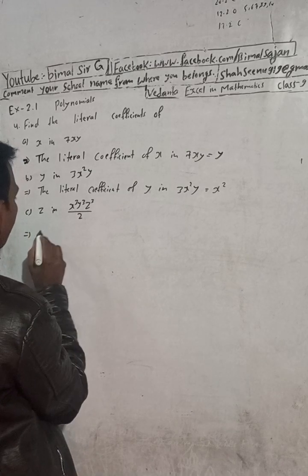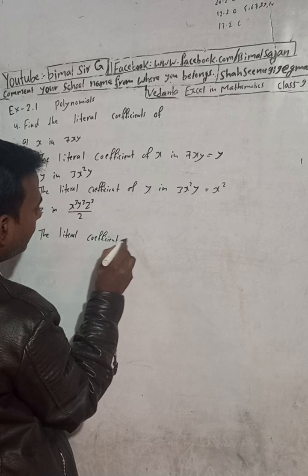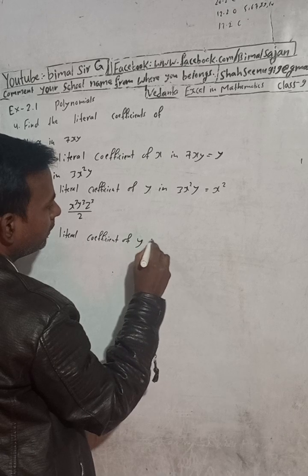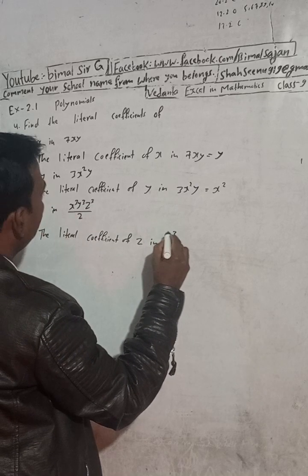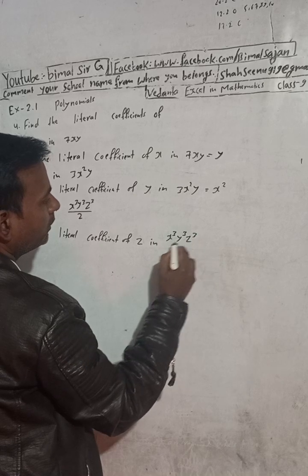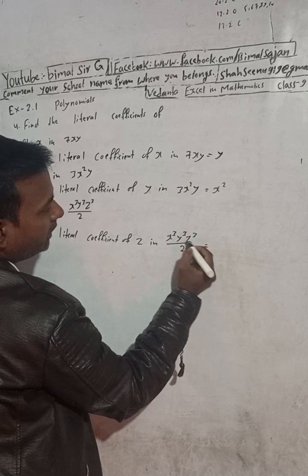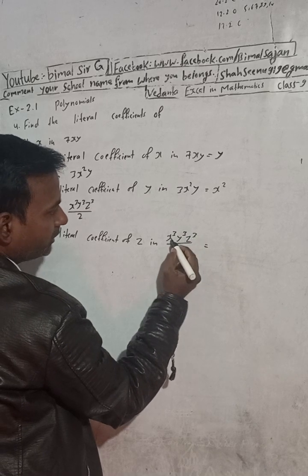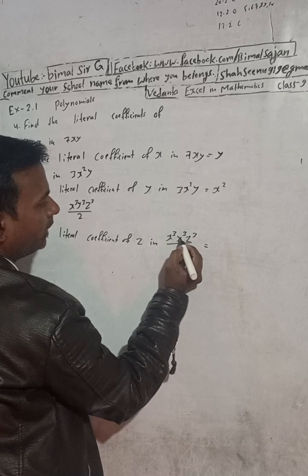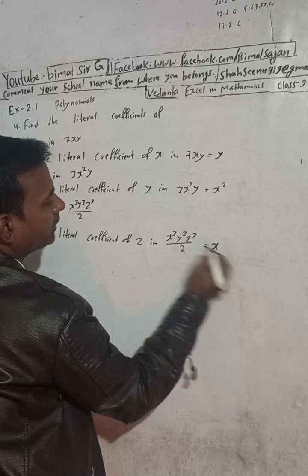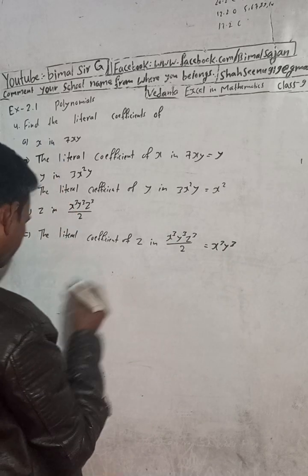In the same way, the literal coefficient of y in x cube y cube z cube divided by two. Two is the numerical coefficient. Accept this z — the literal coefficient of z means exclude z, and x cube and y cube are the alphabets used, so x cube y cube is the literal coefficient.